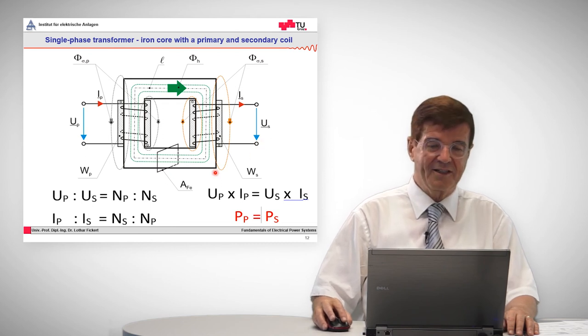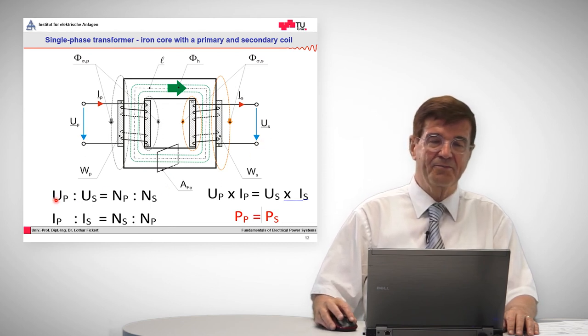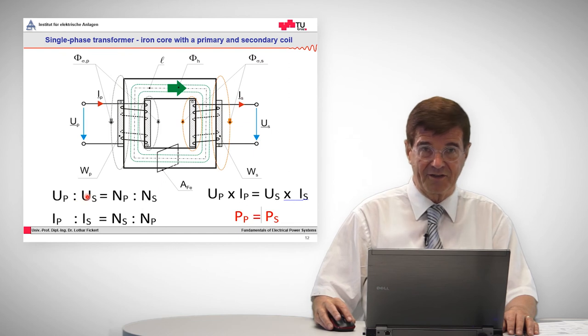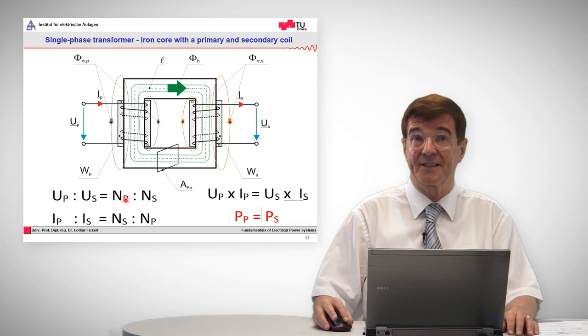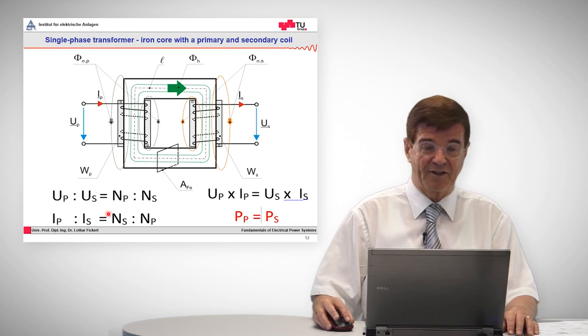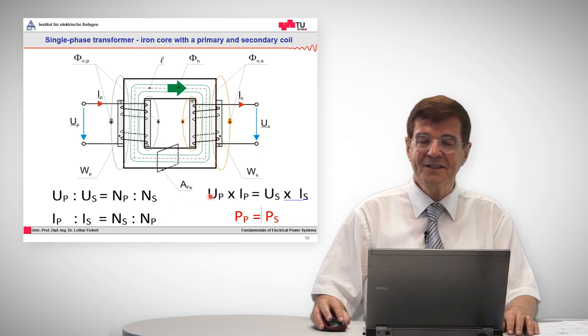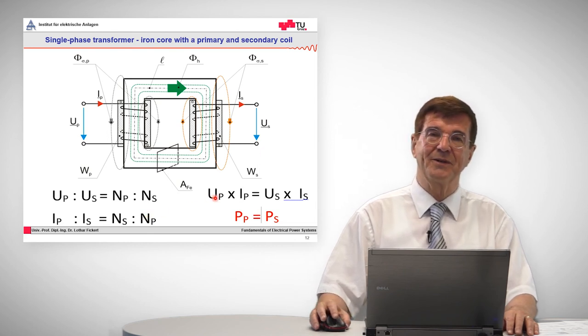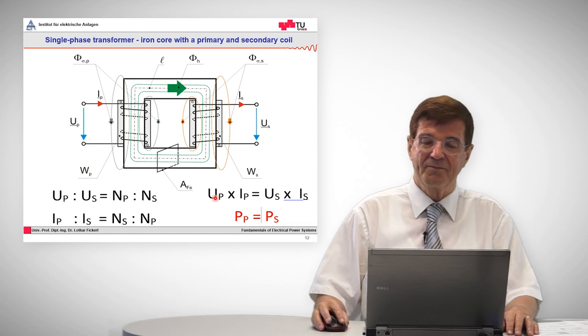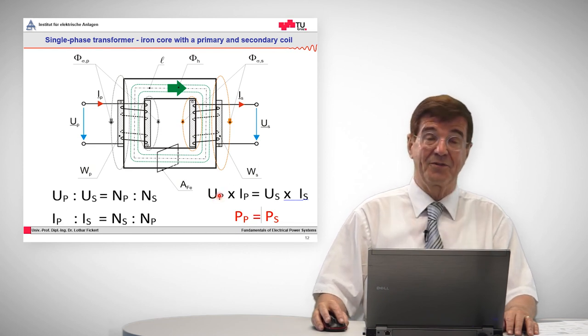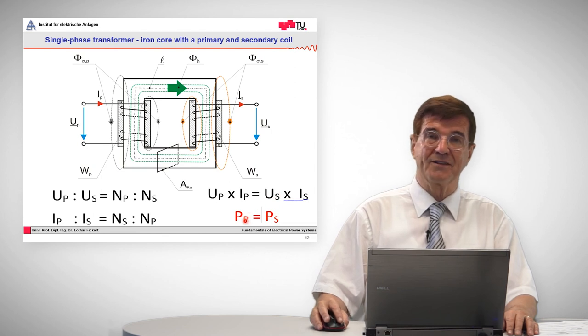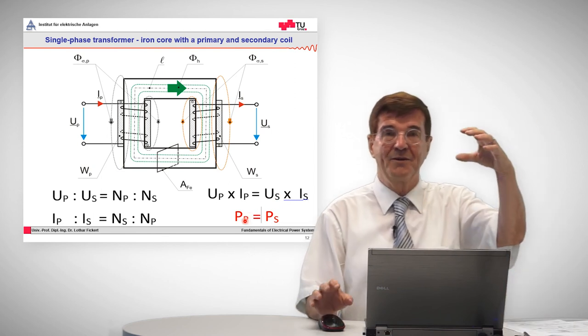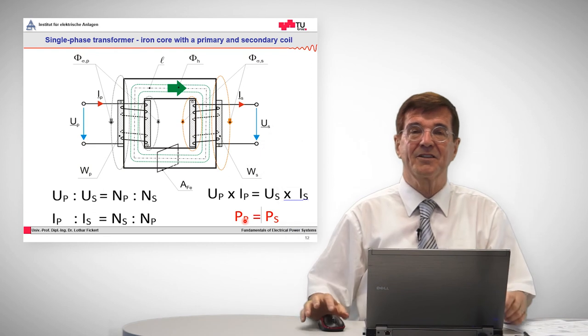For the voltages and current, there is a law that says the primary voltage to the secondary voltage has the same ratio as the primary winding to the secondary winding, and for the current it is exactly vice versa. If you multiply these two equations, you find that the primary voltage times the primary current is the same as the secondary one, which means that the power that is imported into a transformer is the same as the one that goes out. So a transformer does not store energy.